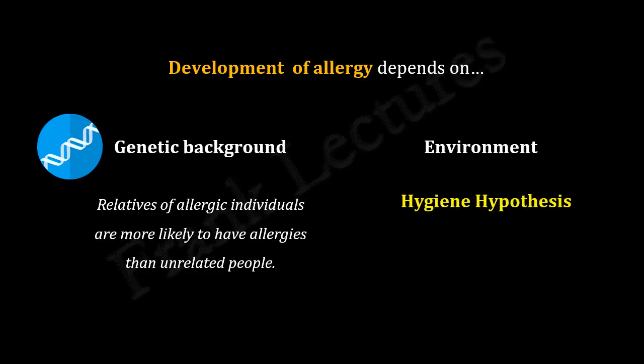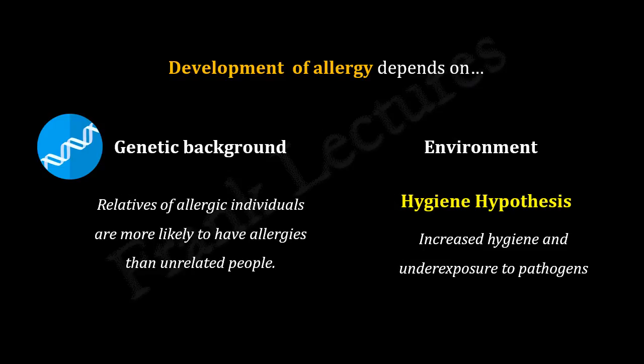We know that besides innate immunity, we have acquired immunity, which means we acquire immunity by getting exposed to antigens in the environment during our life. If somehow an individual fails to encounter sufficient pathogens in infancy, the immune system remains weak, and thus it becomes sensitive to normal environmental antigens. Increased hygiene and underexposure to pathogens are important factors that contribute to this.